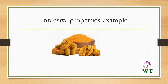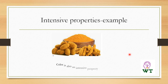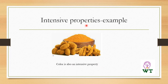Another example is color of a substance, which is also an intensive property. If we take 500 grams of turmeric powder in one bowl and a pinch of turmeric powder in another, both have the same color. Therefore, color is also an intensive property. Intensive property does not depend upon the amount of substance present in the system.